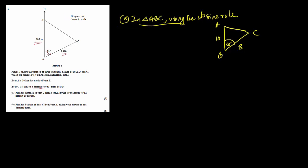The cosine rule states that if you have a non-right-angle triangle and know two sides and the included angle between them, you can find the opposite side. If the two known sides are a and b with included angle theta, then the opposite side c satisfies: c² = a² + b² − 2ab·cosθ. That's how the cosine rule works.